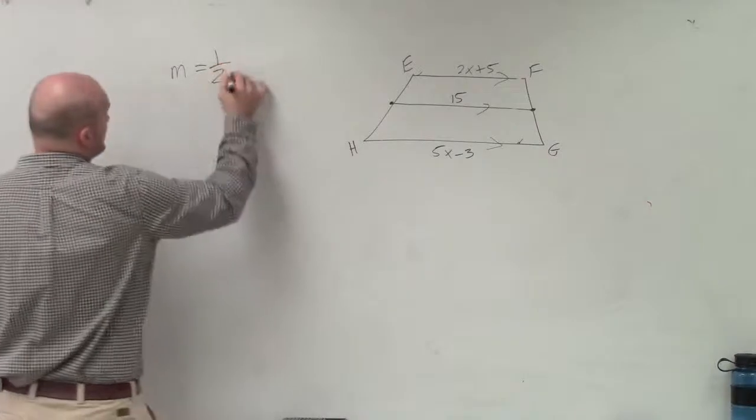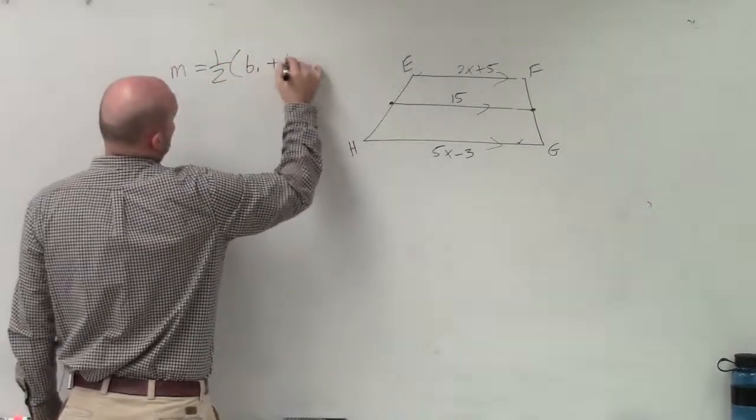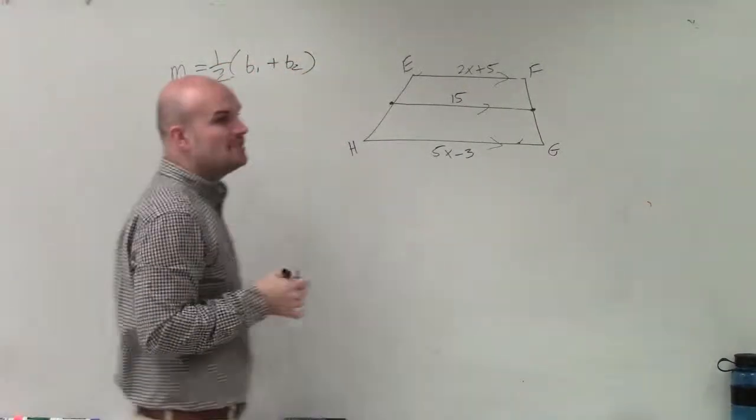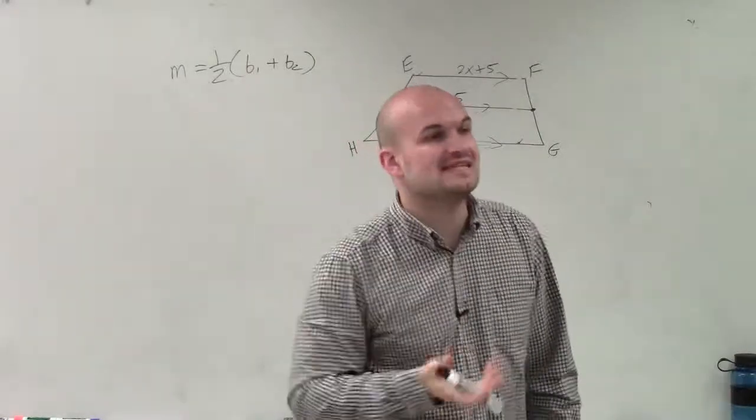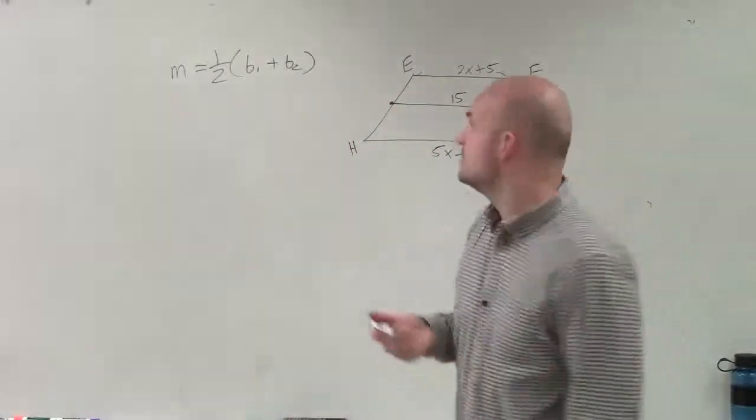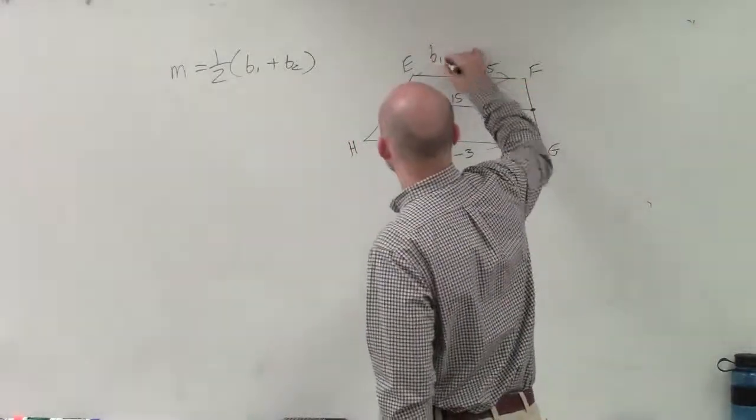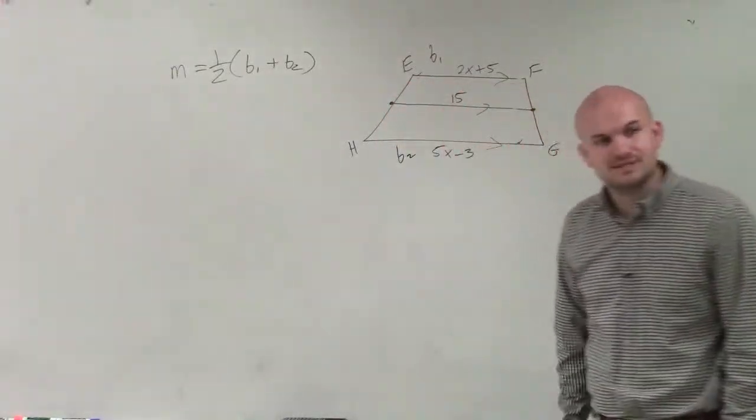So that formula is the sum of your bases times 1 half is equal to the length of your mid-segment. So it doesn't really matter what your bases are, but I'll call that base 1 and that base 2.